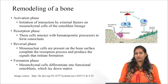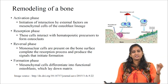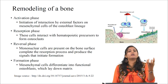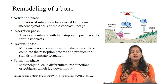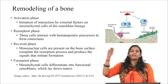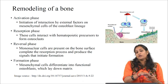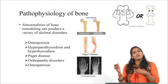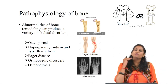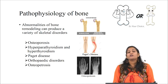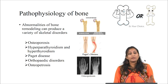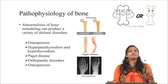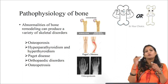In the formation phase, mesenchymal osteoblastic cells produce osteoblasts which fill the cavity resorbed by osteoclasts, thereby laying down the bone matrix. The remodeling cycle starts with interaction between hematopoietic osteoclast precursors and mesenchymal osteoblast precursors forming osteoclast cells, followed by bone resorption, then osteoblast-mediated matrix deposition. Any abnormalities in this bone remodeling cycle lead to various skeletal disorders, for example osteoporosis, hyperparathyroidism, Paget's disease, orthopedic disorders, and osteopetrosis.